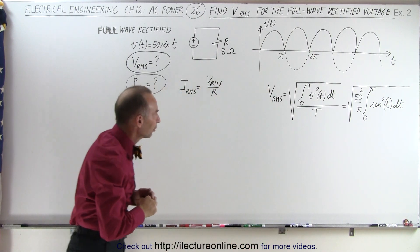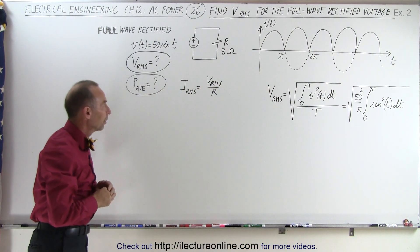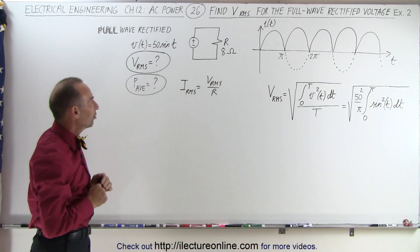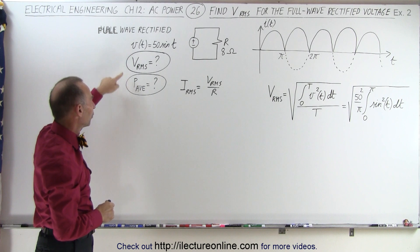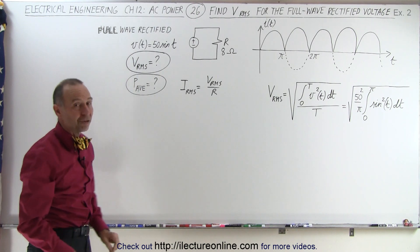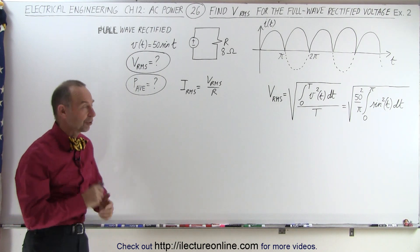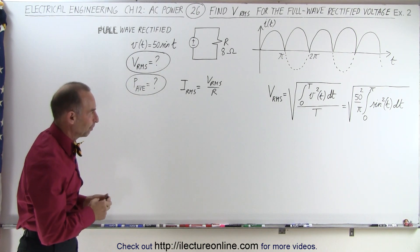And so we have what we call the full wave rectified voltage. We have an 8 ohm resistor, and we're trying to find the RMS voltage and the average power delivered to that resistor.